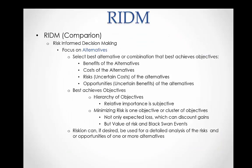Let's look at RIDM and RAM in more detail. First, RIDM. Risk-informed decision making consists of deciding, or choosing, one or more alternatives that best meets an organization's objectives, where some of the objectives are uncertain costs, referred to as risks.